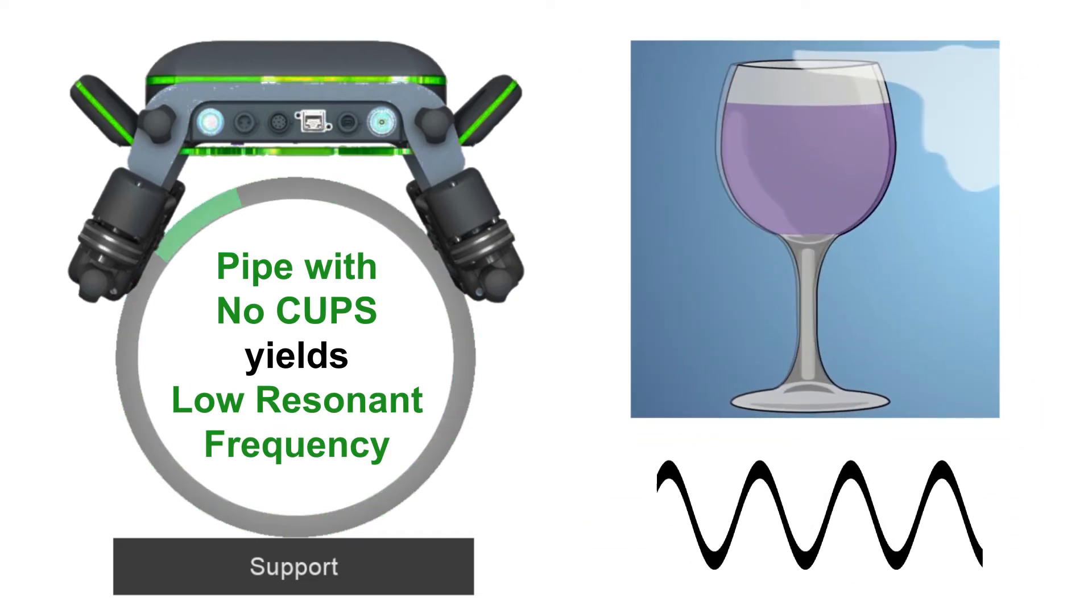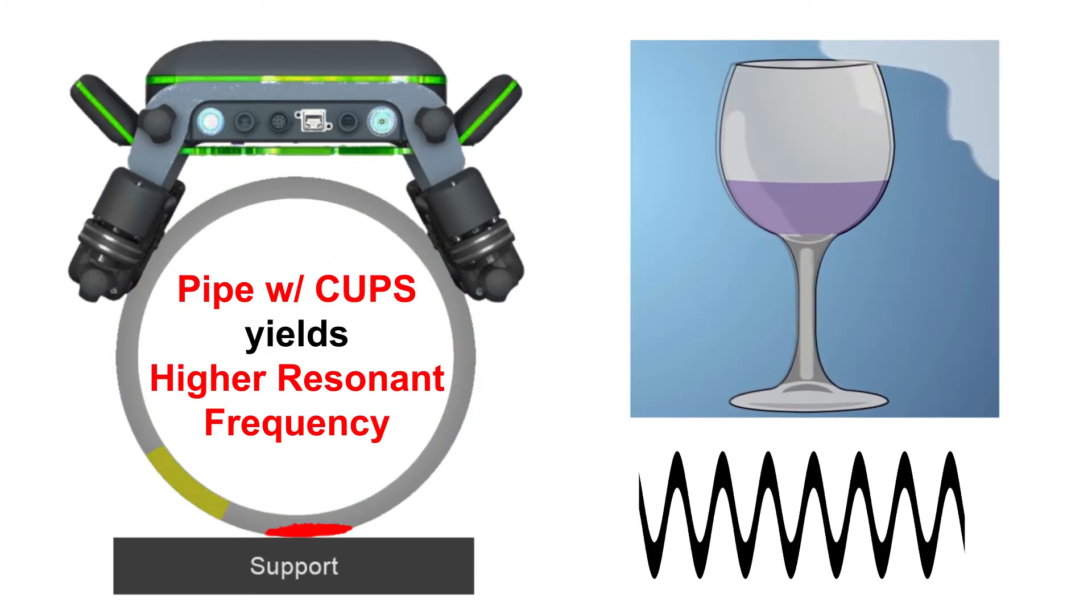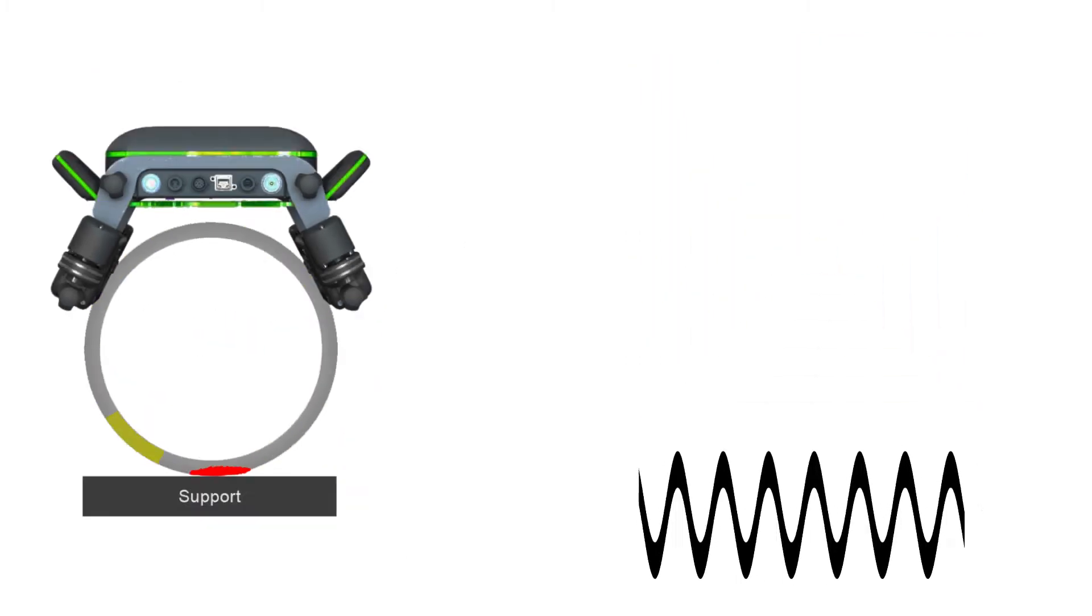On one hand, a pipe with no corrosion under pipe support is analogous to a full glass which yields a low resonance frequency. On the other hand, a corroded pipe is analogous to a half-full glass which yields a higher resonance frequency.